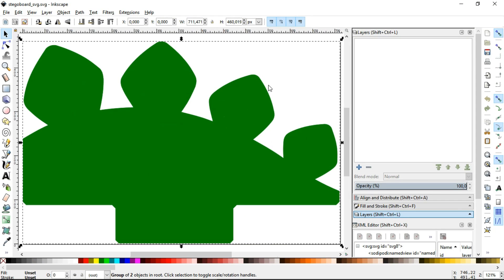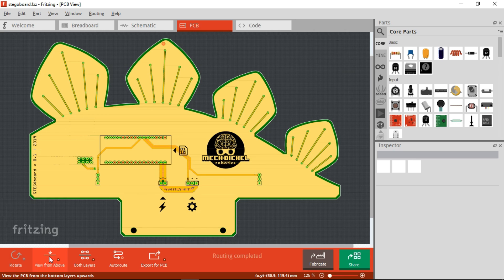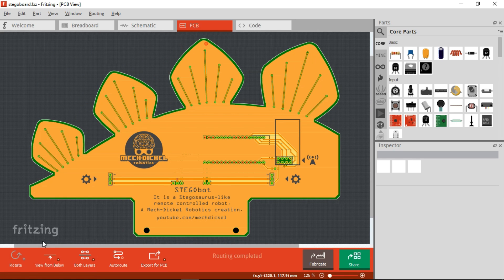The PCB shapefile was made with Inkscape and the schematic and arrangement of the parts on the board was made with Fritzing.